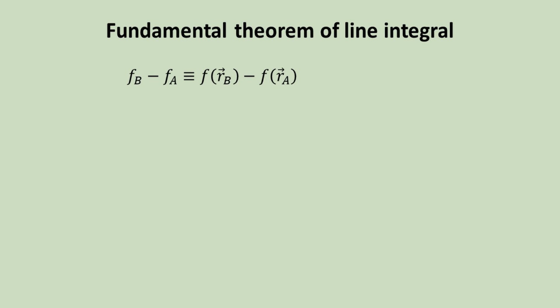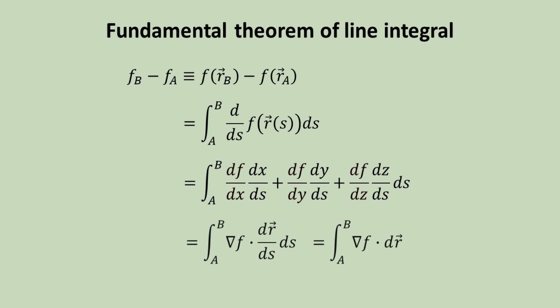The result from previous slide can also be derived mathematically, a result known as the fundamental theorem of line integral. We begin with the difference of the scalar field at points A and B, which can be written as the integral of a total derivative, where the position vector is parameterized by S. Using the chain rule allows us to rewrite this derivative, in terms of the components of the gradient field. Finally, we can express it as a line integral of the gradient field, irrespective of the path taken between A and B. This is the same result we obtained previously, from energy conservation arguments. Here we show the mathematical result, that the line integral of a gradient field is always path independent.